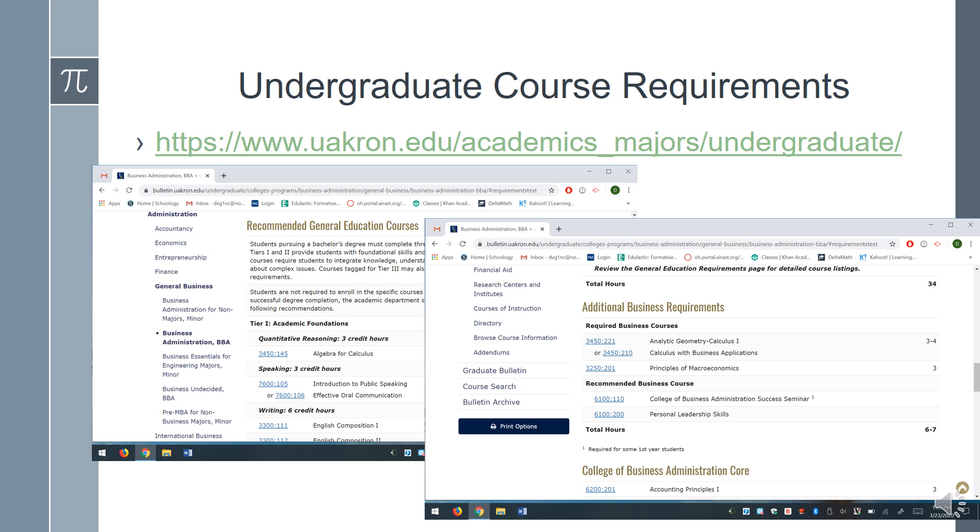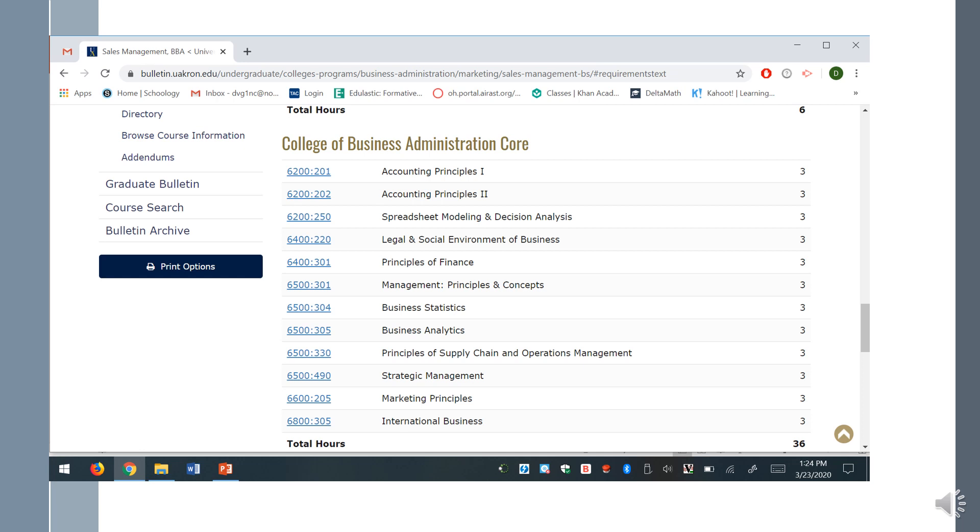Here on this page is a quick overview of a project that we would normally do right before spring break which would allow you an opportunity to research schools that you might be interested in attending and look at some of their requirements, especially for math credits. You can see the University of Akron requirements here for business: algebra, calculus, analytic geometry. Maybe you can use some of the time that you have off to go to the school you're interested in and look up their undergraduate program and specific course requirements.